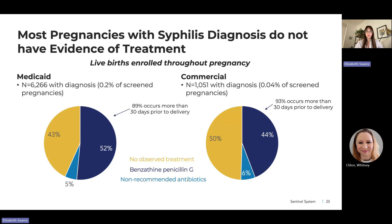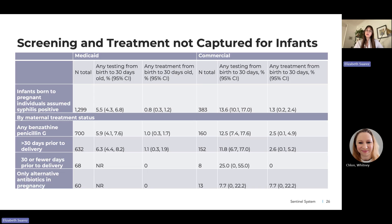Switching to treatment data, 43% of Medicaid-insured and 50% of commercially insured pregnancies among those with a syphilis diagnosis had no evidence of treatment. About 5–6% had evidence of non-recommended treatment. For infant screening and treatment, our data source is likely not capturing this well. Only about 5% of Medicaid-insured and 14% of commercially insured infants born to individuals with a syphilis diagnosis had evidence of screening in the first 30 days of life, with very small numbers for treatment, likely reflecting limitations in capturing this care due to insurance reimbursement practices near delivery.